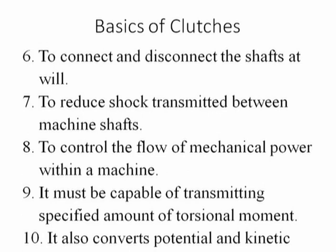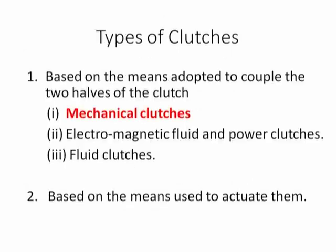A clutch must be capable of transmitting a specified amount of torsional moment — that is the requirement of a mechanical clutch — and it converts the potential and kinetic energy. When the two members come in contact with each other, there will be a contact friction, or it can be a positive contact. Let us have a look at different types of clutches based on the means adopted to couple the two halves of the clutch.